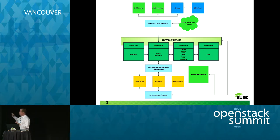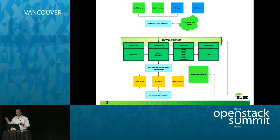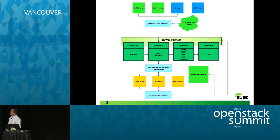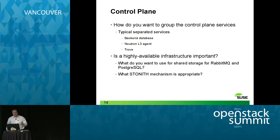This diagram I put together illustrates the service architecture of a cloud deployment. You've got your control plane in the middle, your VM hosts in the orange-ish yellow, and then your external integrations — whether that be SUSE Studio, SUSE Manager, or an external vSphere cluster. From a technical perspective, let's look at how you want to group the control plane services.